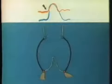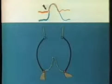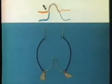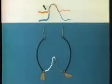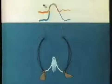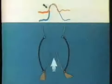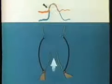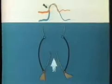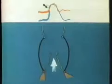В фазе изоволюмического расслабления все силы, действующие на элементы комплекса, уравновешиваются. Комиссуры удлиняются. Края створок поднимаются по оси клапана. В фазе изоволюмического напряжения края створок продолжают подниматься, не оказывая сопротивления потоку крови. Перепада давления нет.